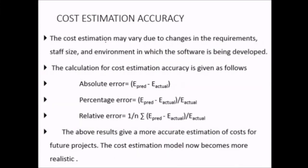Cost estimation accuracy may vary due to changes in requirements, staff size, or the environment in which software is developed. Absolute error = E_predicted − E_actual; percentage error = (E_predicted − E_actual) / E_actual; and relative error is the summation of those divided by n. These results give more accurate estimates of cost for future projects, making cost estimation models more realistic.